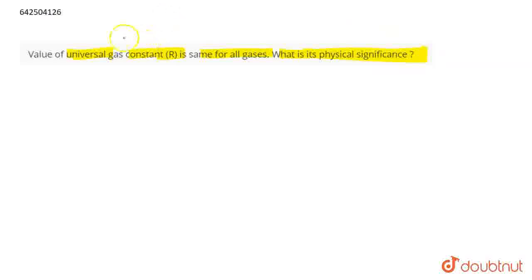Now, if we talk about the value of universal gas constant, let us understand how it is calculated. We have the ideal gas equation as PV equals RT for one mole of a gas, or PV equals nRT for n moles of a gas.